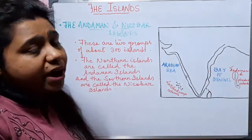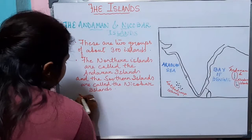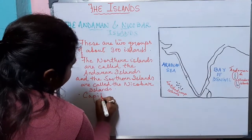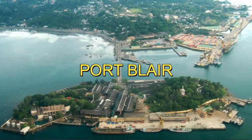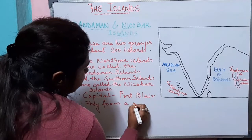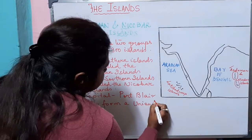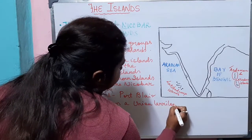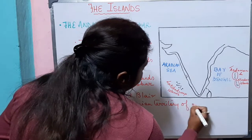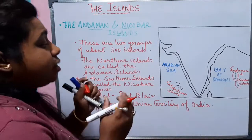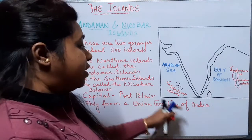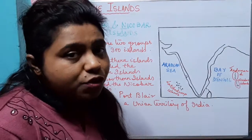The southern islands are called the Nicobar Islands. The capital of the Andaman and Nicobar Islands is Port Blair. They form a union territory of India, so the Andaman and Nicobar Islands is a part of the union territory of our country India.